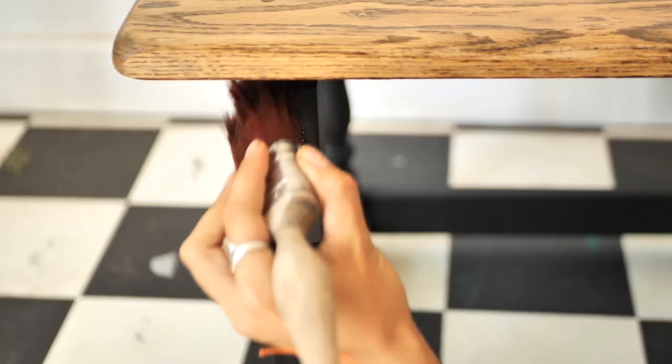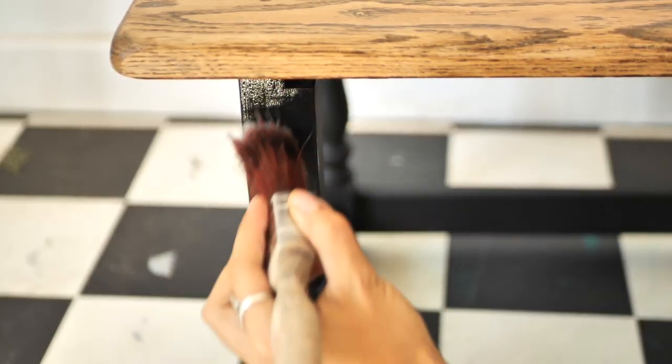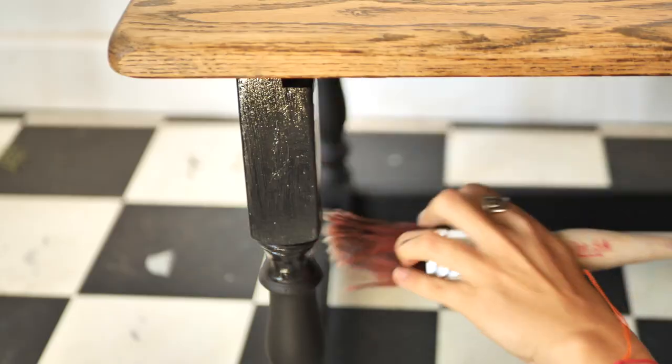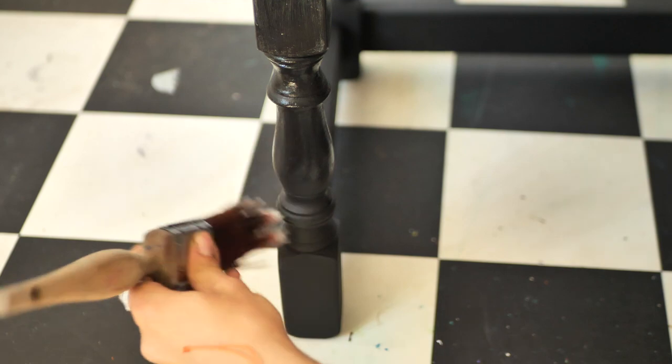For this top we seal the legs with one layer of Gator Hide for tough protection, and then we applied two layers of satin clear coat to make the legs shine but not as much as the Gator Hide finish.